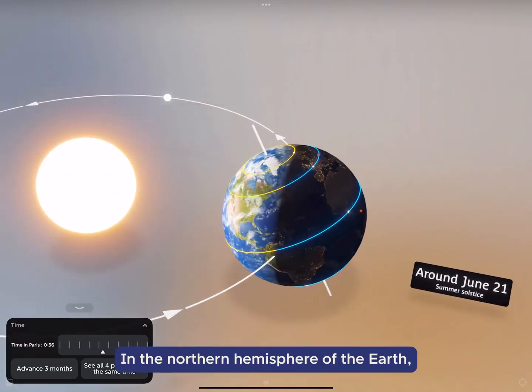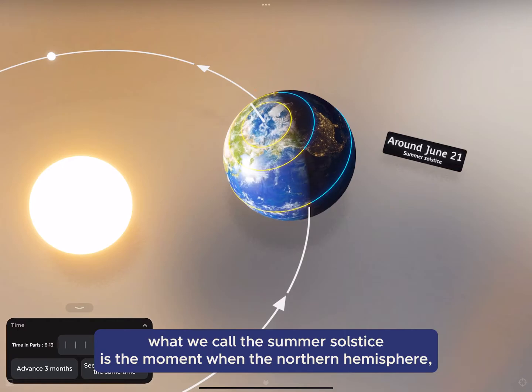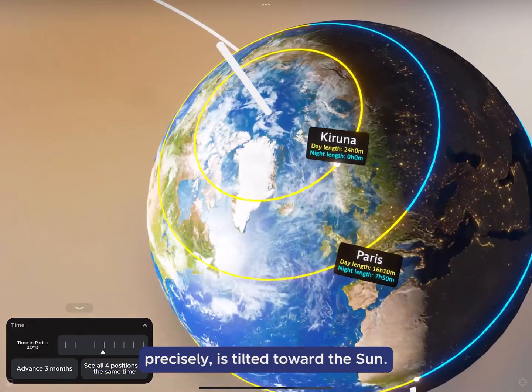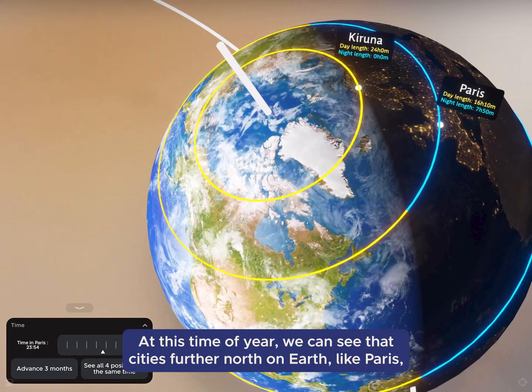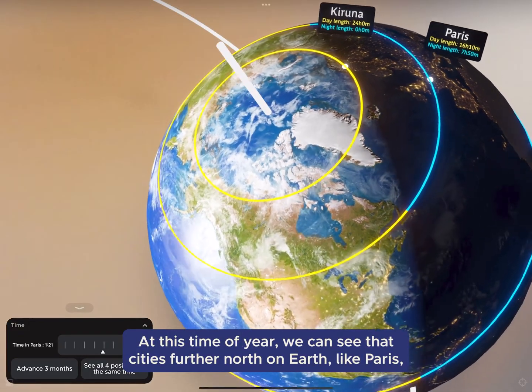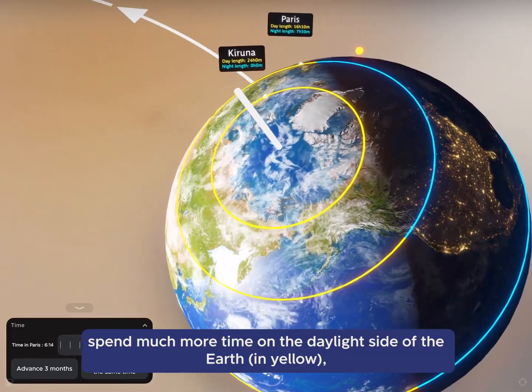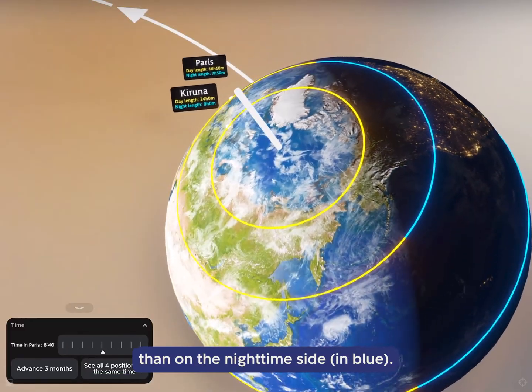In the northern hemisphere of the Earth, what we call the summer solstice is the moment when the northern hemisphere, precisely, is tilted toward the Sun. At this time of year, we can see that cities further north on Earth, like Paris, spend much more time on the daylight side of the Earth, in yellow, than on the nighttime side, in blue.